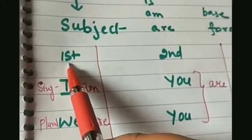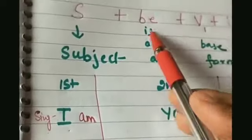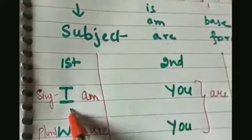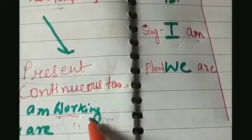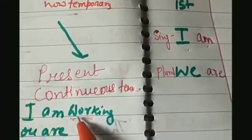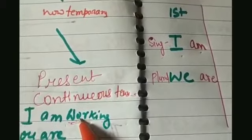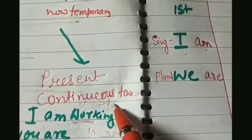In first person singular, we use I. With I, the be form is am. So, I am — and the basic form of the verb is work, and adding ing makes it working. That gives us: I am working. This is the V1 plus ing form of the verb.